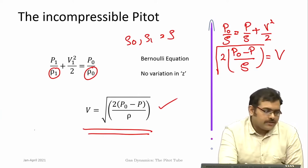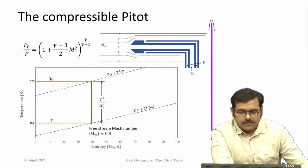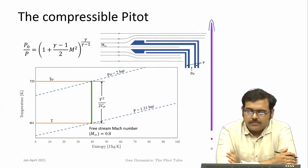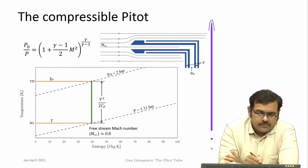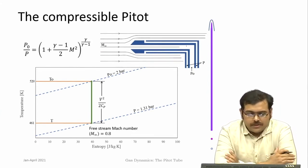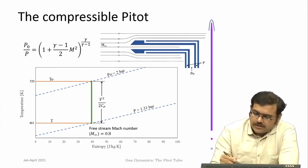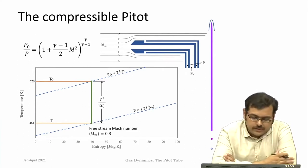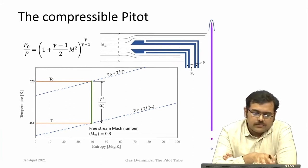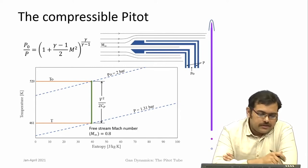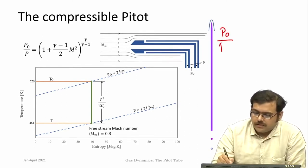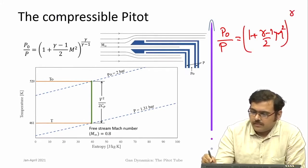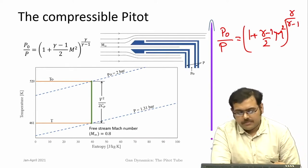One has to look at the basic definition of the process itself. The process happening within the pitot tube is actually a stagnation process where the flow comes in and stagnates within the pitot tube. Once you measure both P₀ and P, and the Mach numbers are greater than 0.3, you have to use the stagnation process. Under the stagnation process the relationship between P₀ and P is: P₀/P = (1 + (γ−1)/2 · M²)^(γ/(γ−1)), for a calorically perfect gas.